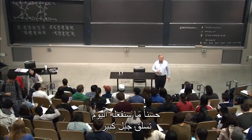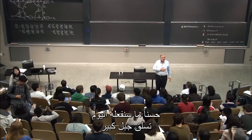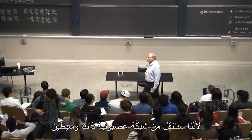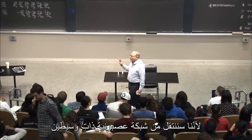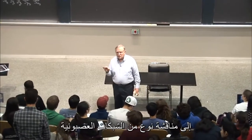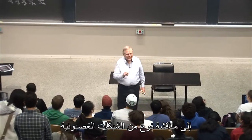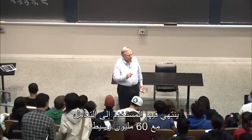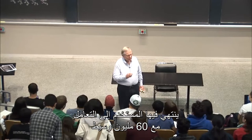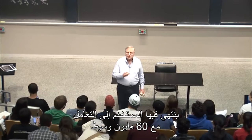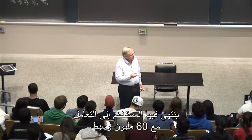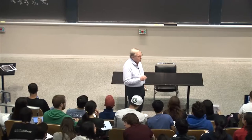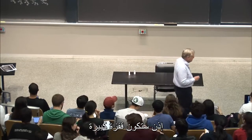What we're going to do today is climb a pretty big mountain, because we're going to go from a neural net with two parameters to discussing the kind of neural nets in which people end up dealing with 60 million parameters. So it's going to be a pretty big jump.